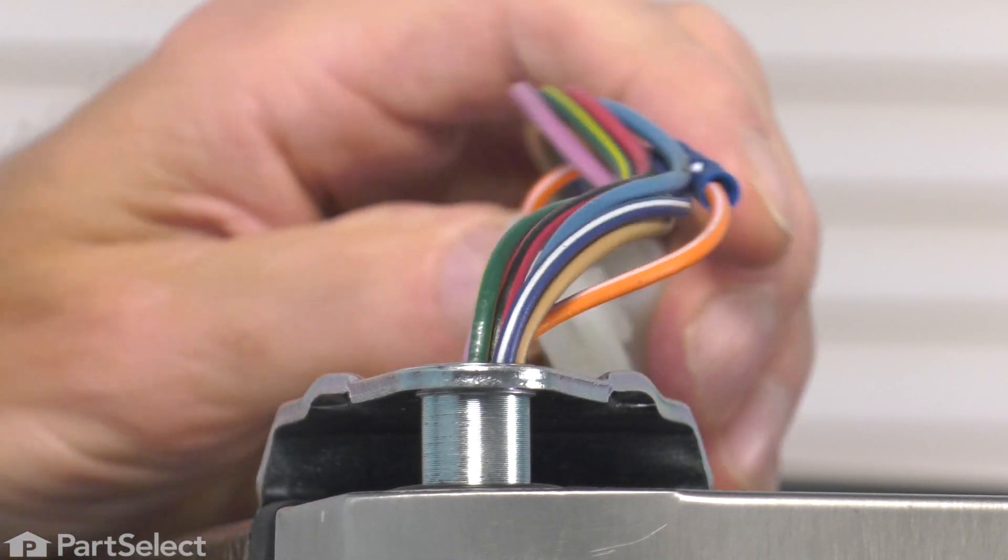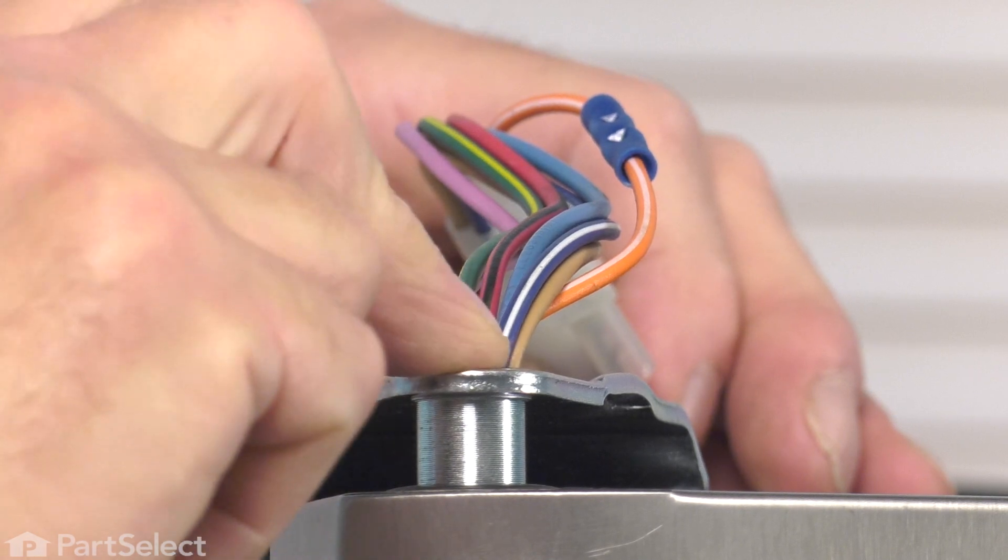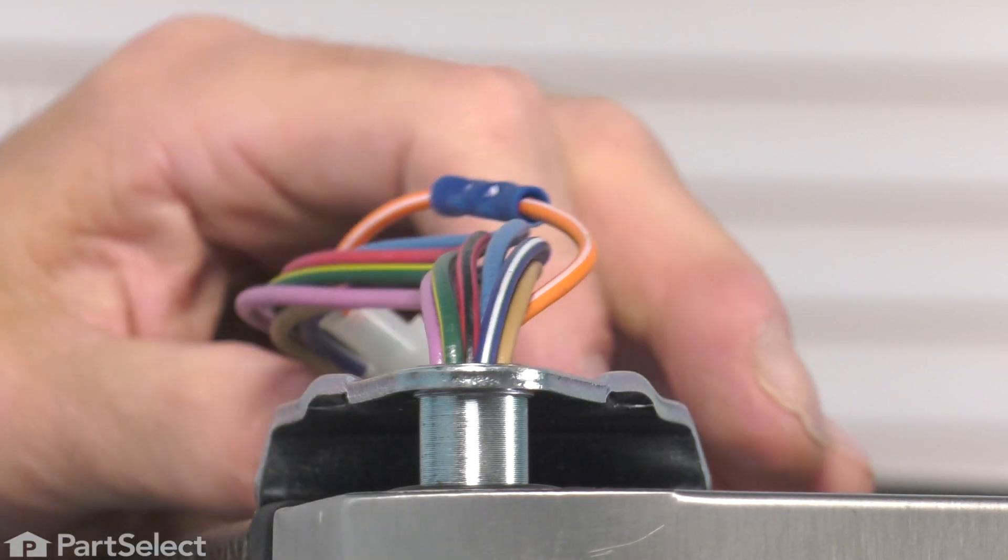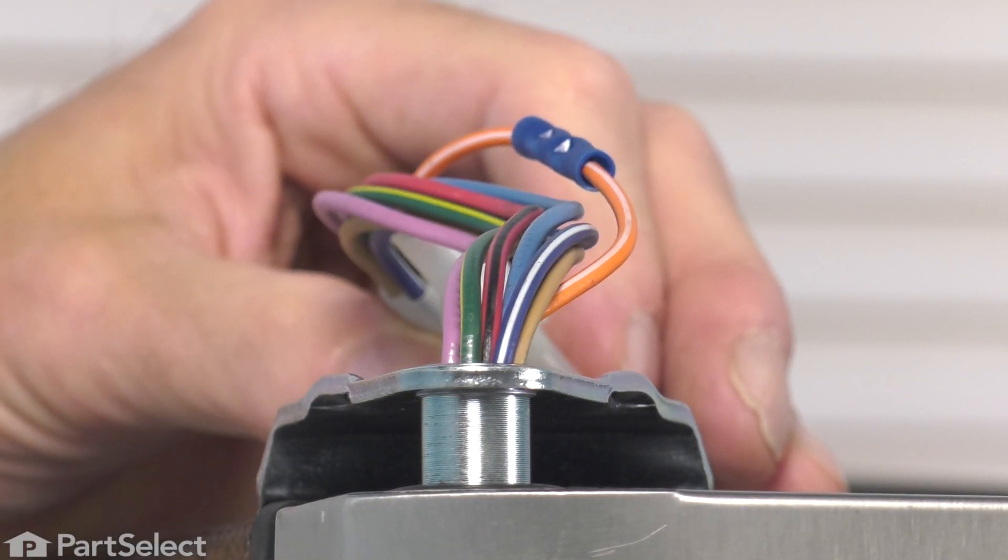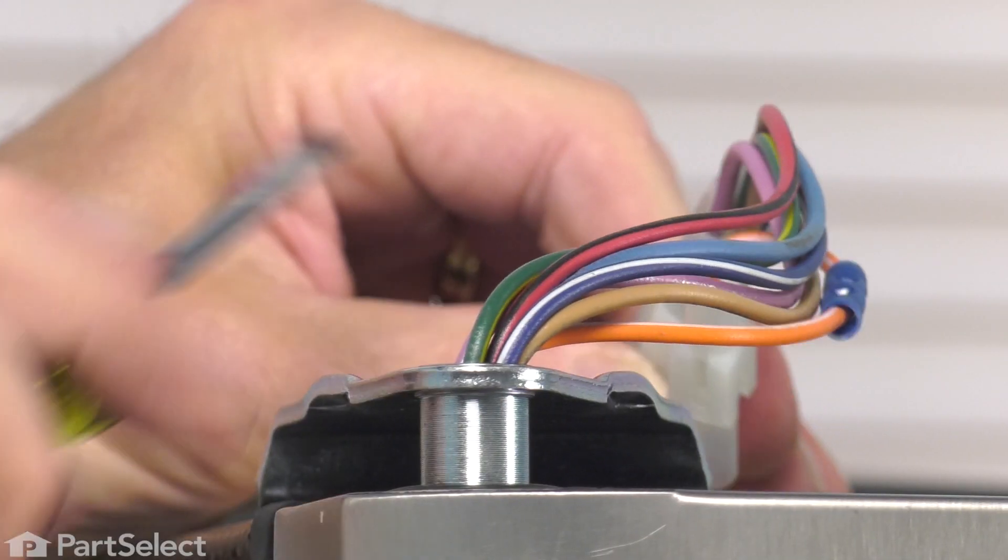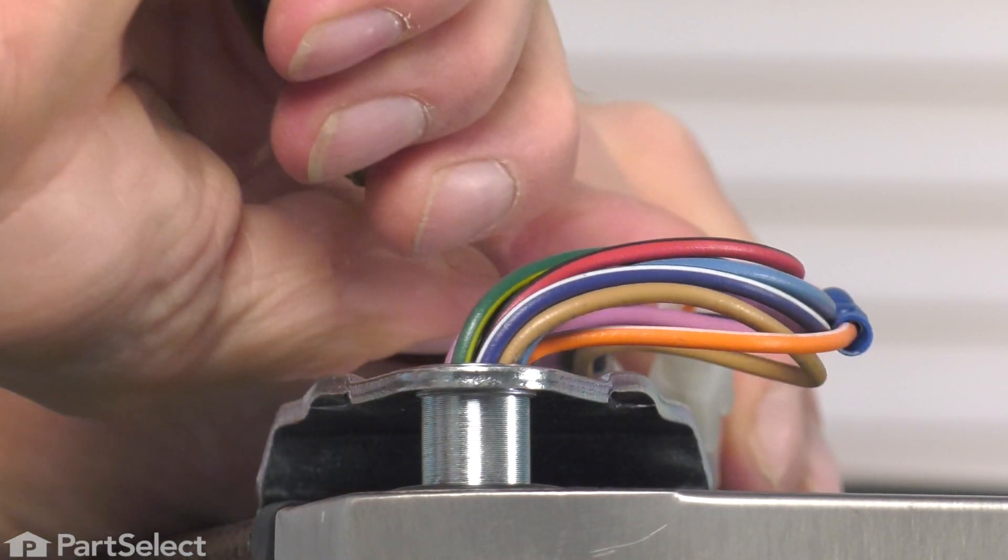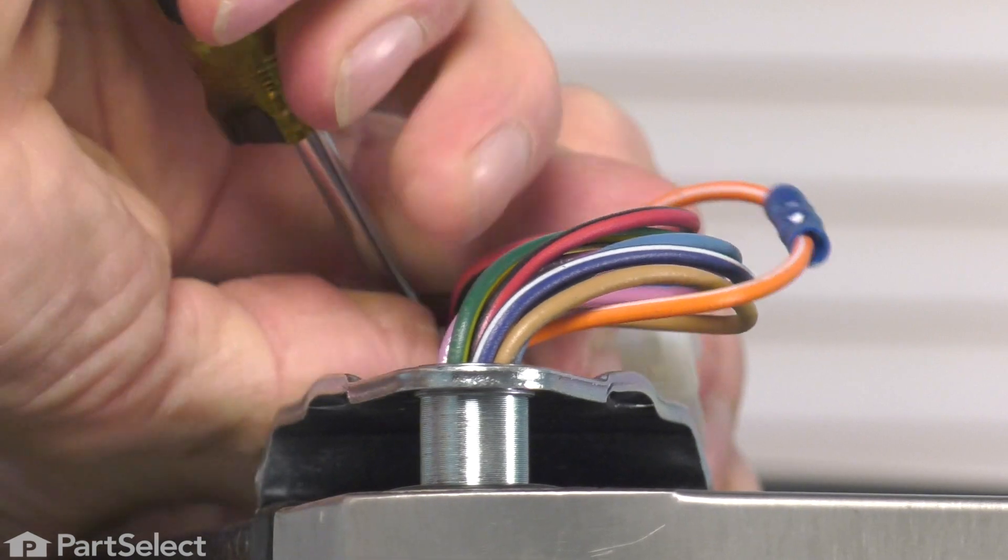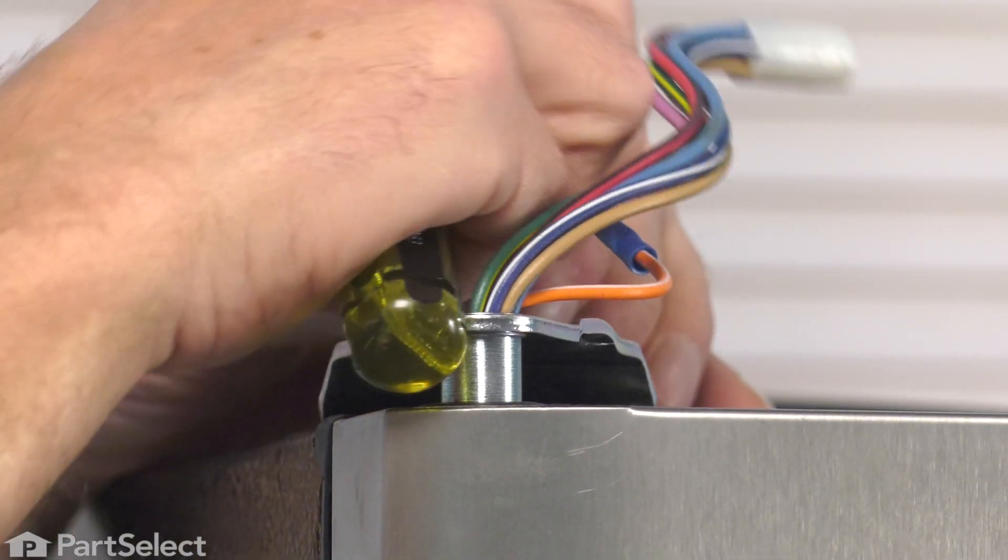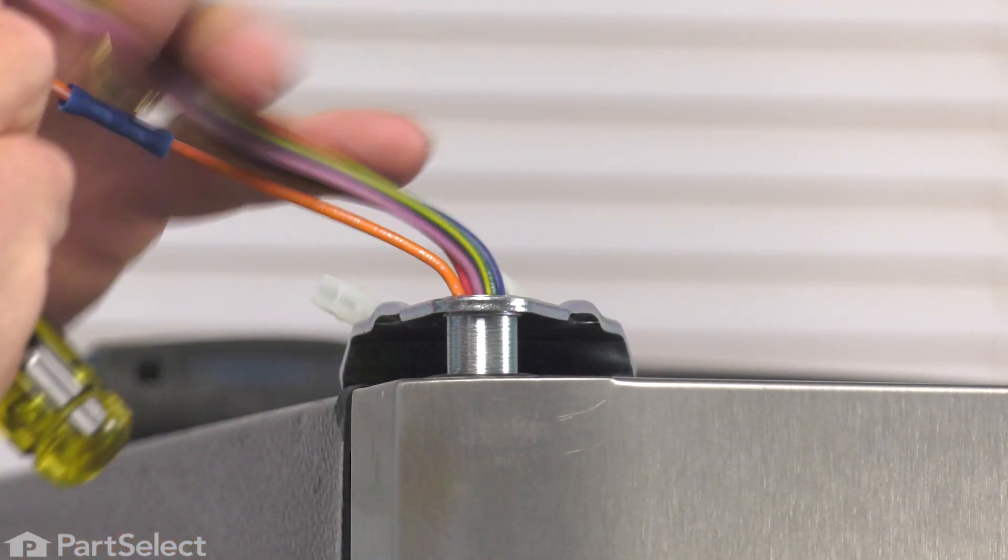Now, we also need to disconnect that wire harness that goes down through the hinge. Stick a flat blade screwdriver in—there is a little bit of a locking tab on that large harness connector. I'm just going to pry that away just enough that we can pull the harness apart as well as the small one.